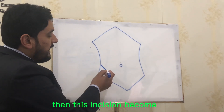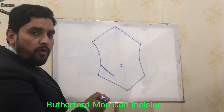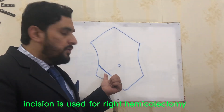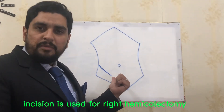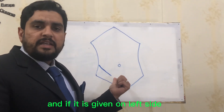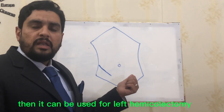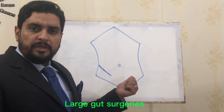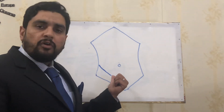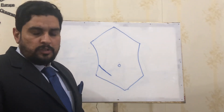We have another incision called the Rutherford Morrison incision. If we extend the gridiron incision posteriorly, then it becomes the Rutherford Morrison incision. This incision is used for right hemicolectomy, and if it is given on the left side, it can be used for left hemicolectomy and large gut surgeries.